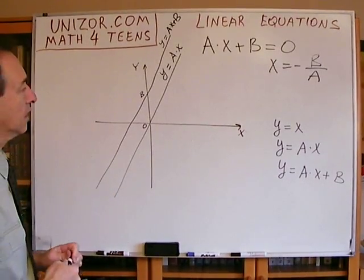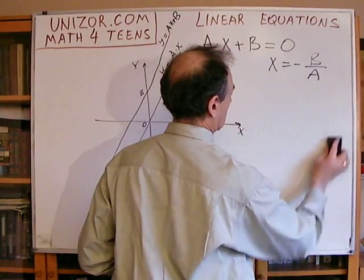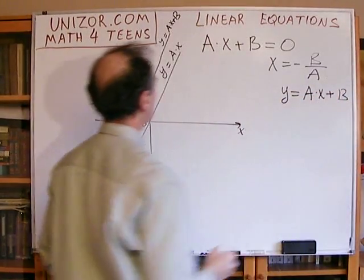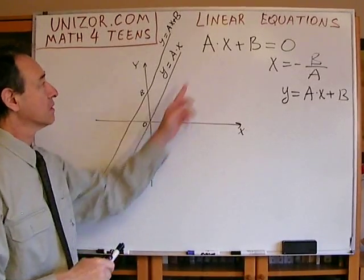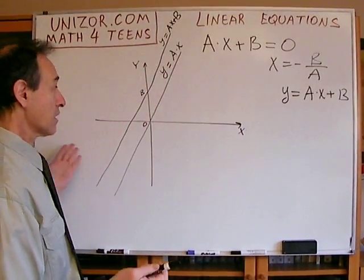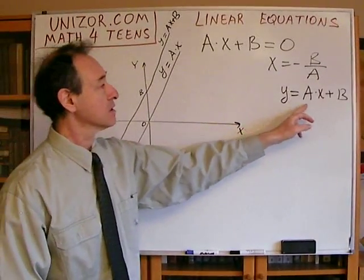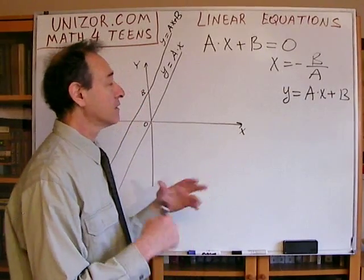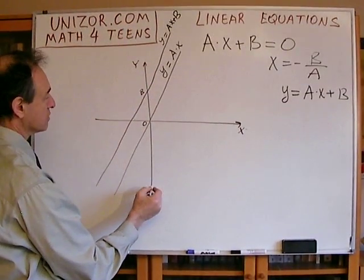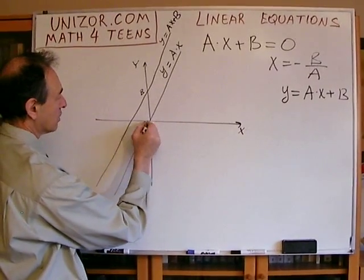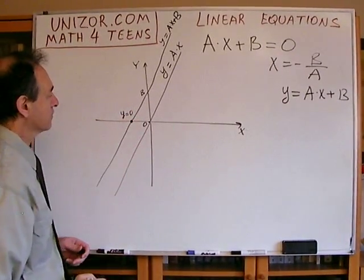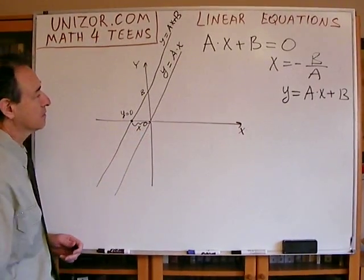Now, when we have this graph, we can solve graphically the equation ax plus b equals zero. If this is y equals ax plus b, the question is: when is y equal to zero? Because when y equals zero, that means ax plus b equals zero. So under what conditions does y equal zero? Obviously, y equals zero corresponds to the point where the line crosses the x-axis. That particular point is where y equals zero, and the question is: what is x in this case?